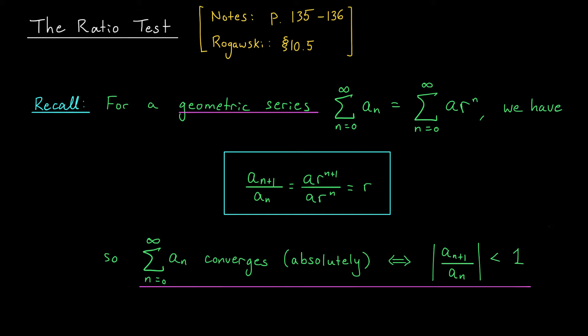So for a geometric series we can state the following equivalence: the series will converge absolutely if and only if the ratio of consecutive terms in absolute value is less than 1. The idea behind the ratio test is that we want to extend this connection to series that might not be geometric. We can't expect it to carry over exactly, because for a non-geometric series this ratio won't even be a constant — it will depend on n. But we can still ask the question: how does this ratio behave in the long run when n goes off to infinity? If it's approaching something bigger than 1, maybe our series diverges, since it's behaving comparably to a divergent geometric series. If instead it's converging to something less than 1, maybe it makes sense that our series converges absolutely.